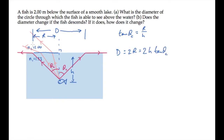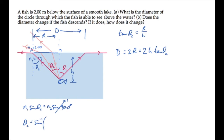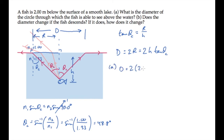We'll find the critical angle by applying Snell's law to the ray shown in red. For this ray, with that angle being theta c, we have N1 sine theta c equals N2 sine of 90 degrees. Sine of 90 degrees is 1, and the critical angle equals the inverse sine of the ratio of the indexes, air to water. That gives 48.8 degrees. We can substitute that value into our expression above to find the answer to part a: the diameter of the circle is 4.57 meters.